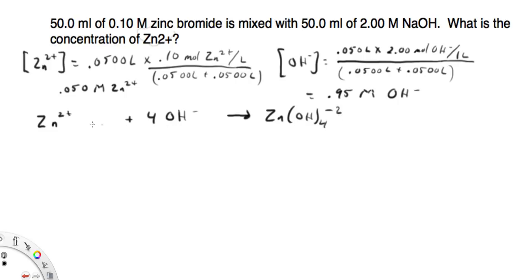What we need to do is figure out the concentration of zinc initially and the concentration of hydroxide initially. So here's my 50 mL times the concentration divided by the 100 mL total — that's going to give me 0.050 molar zinc initially. And here's my 50 mL times the concentration of 2 molar. Volume times concentration gives me moles, divided by the total volume — 50 plus 50 — gives me 0.95 molar for the hydroxide.